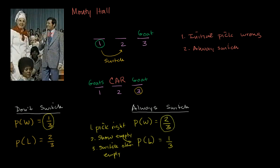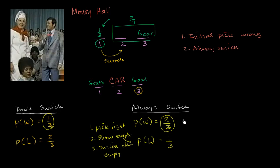Another way to think about it: when you make your initial pick, there's a one-third chance the prize is there and a two-thirds chance it's in one of the other two doors. The host is going to empty out one of those, so when you switch, you're essentially capturing that two-thirds probability. Hopefully you enjoyed that — we'll see you next time.